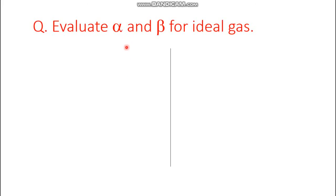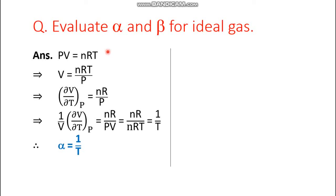We have to evaluate alpha and beta — the thermal expansion coefficient and compressibility coefficient — for ideal gases. Starting with alpha using the ideal gas equation for n moles: PV = nRT. V is taken to the left-hand side and all other parameters to the right-hand side. Volume is differentiated with respect to temperature at constant pressure, so pressure becomes constant and temperature is the variable.